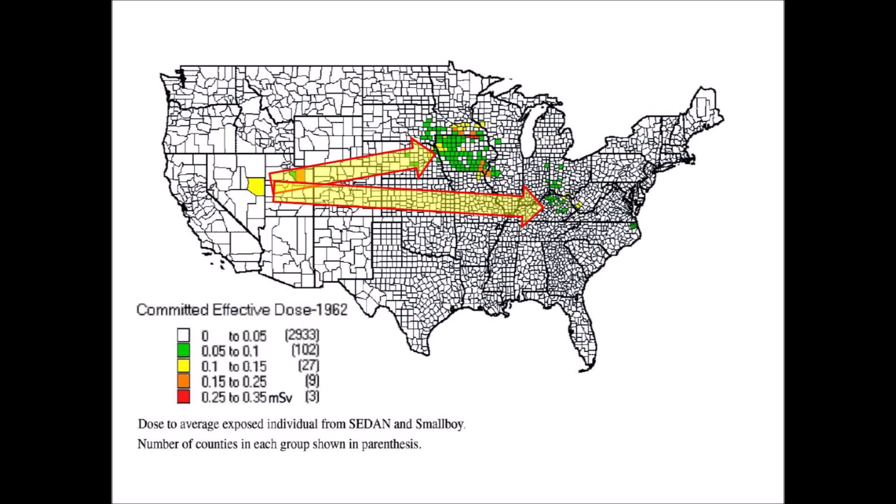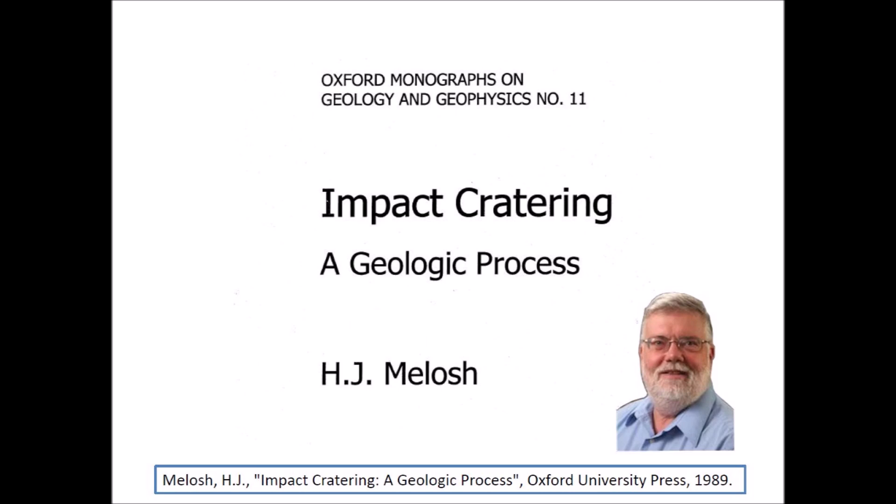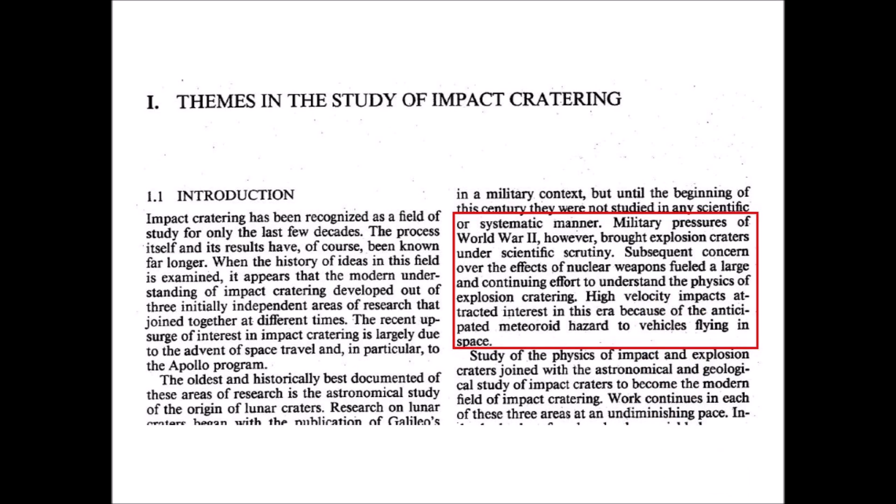It has been estimated that the radioactive doses were large enough to produce 25,000 to 50,000 cases of thyroid cancer around the country, of which 2,500 would be expected to be fatal. Professor Melosh's book explains how the equations correlating impact energy with crater size were developed. Military pressures of World War II brought explosion craters under scientific scrutiny, and subsequent concern over nuclear weapons fueled a large effort to understand the physics of explosion cratering.